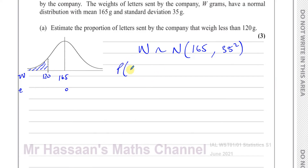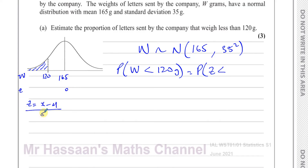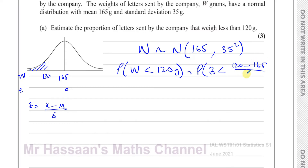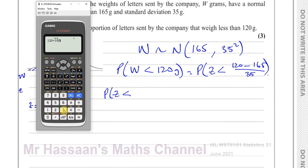We want to find P(W < 120), which equals P(Z < z). The standardization formula is Z = (X − μ) / σ. Here X = 120, μ = 165, σ = 35. So Z = (120 − 165) / 35 = −45 / 35 = −1.29, keeping two decimal places since the Z table is given to two decimal places.